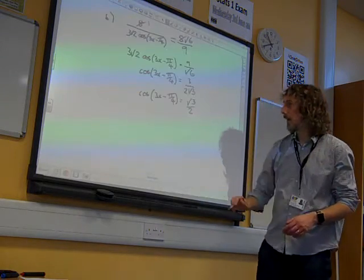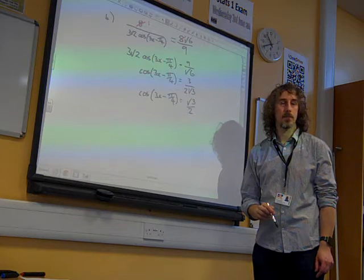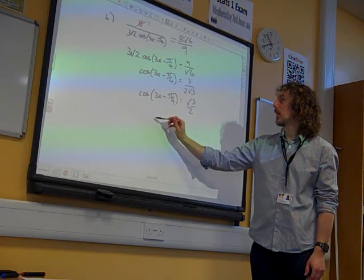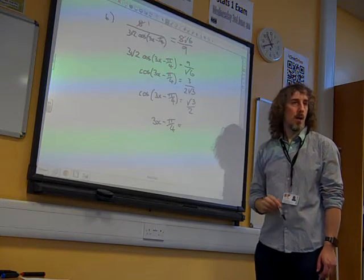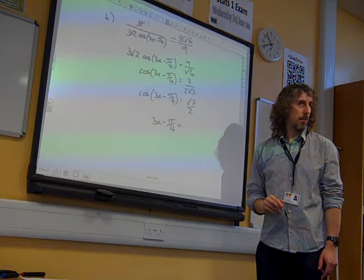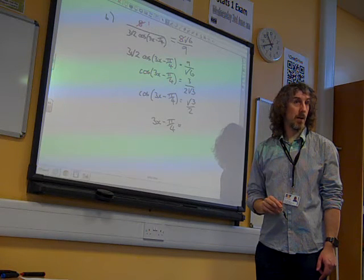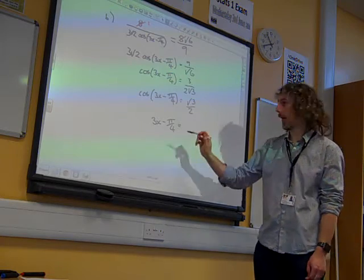If we do inverse cos of root 3 over 2, then we get π by 6. We get π by 6.